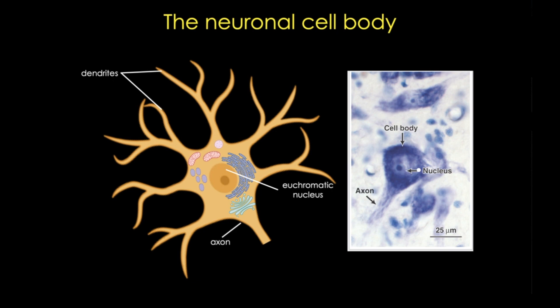The nucleus of a neuron contains euchromatin and generally stains rather pale with a prominent nucleolus. Now, since most of the components of the axons and dendrites are produced in the cell body and shipped out,